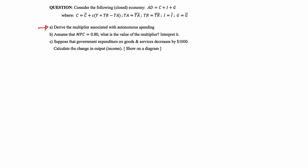Starting with question A, which says: derive the multiplier associated with autonomous spending. We start by saying the aggregate demand is equal to consumption plus investment plus government spending. Given that investment is autonomous and government spending is also autonomous, we substitute this into the aggregate demand function.